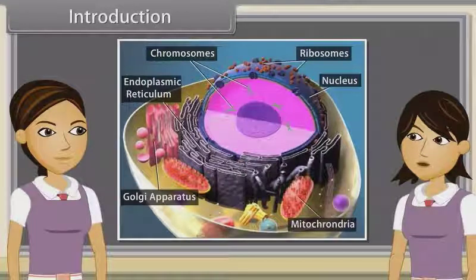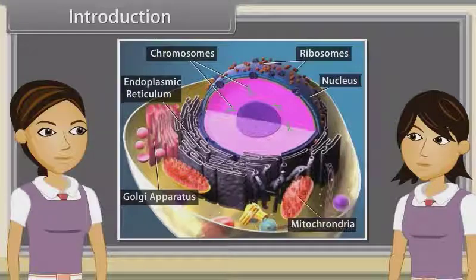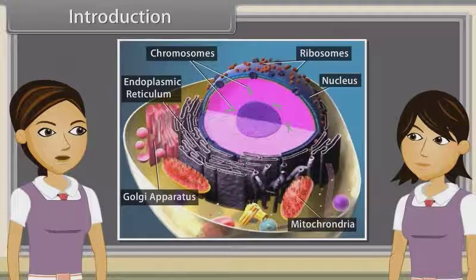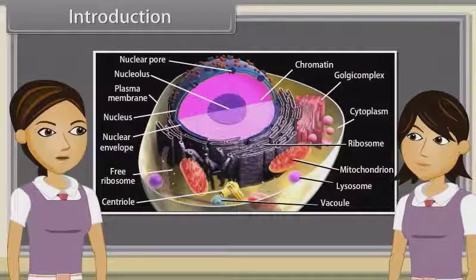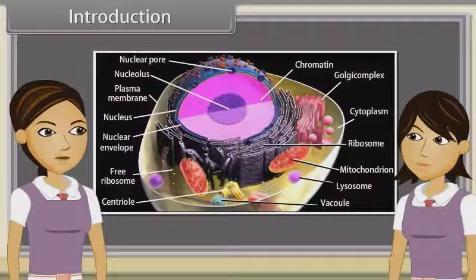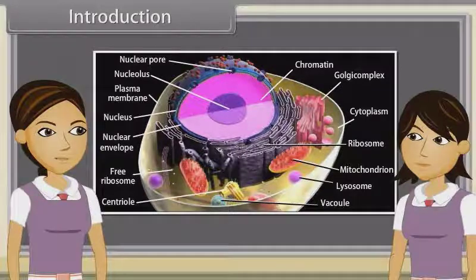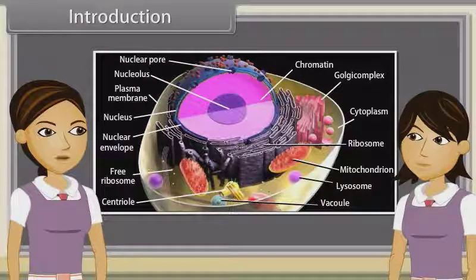I think we have completed all the topics. No Madhuri, there are some more topics to be learned. They are: structure of cytoskeleton, cilia and flagella, centrosomes and centrioles, nucleus and microbodies. So come, let's know about them in this module.